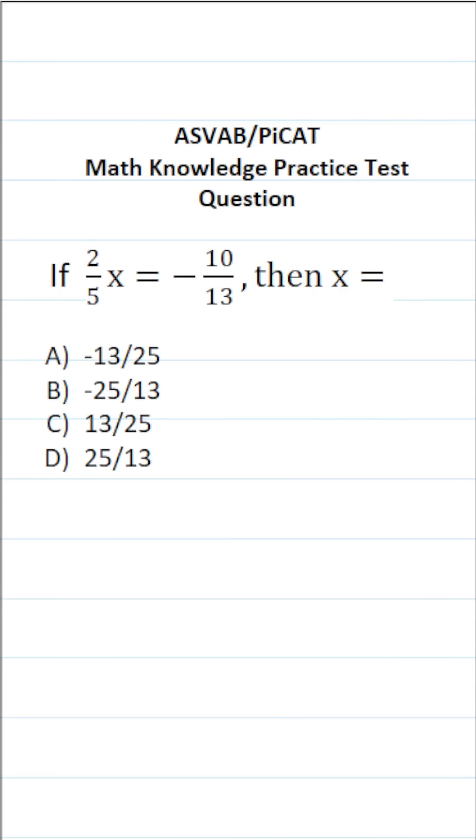This math knowledge practice test question for the ASVAB and PiCAT says, if two-fifths x equals negative 10 over 13, then x equals.